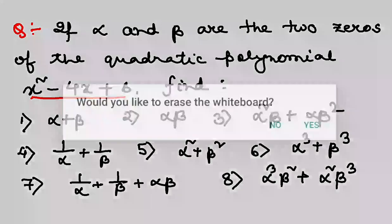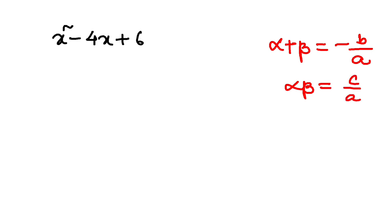Alright. So if we go to the solution, my polynomial is x square minus 4x plus 6. What we know is the sum of the zeros of a quadratic polynomial is minus b by a, and product of the zeros, alpha beta, is c by a, isn't it?